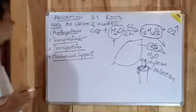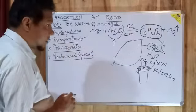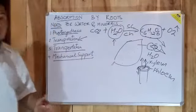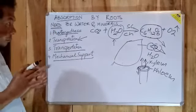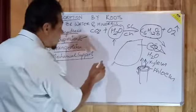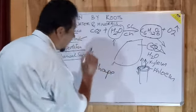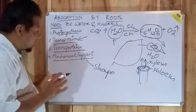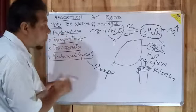Then the last one obviously is mechanical support. What is mechanical support? Once the plant becomes turgid, that is when it becomes full, then it basically gives a shape to the plant. It gives a shape to the plant, therefore it provides support to the plant so the shape of the plant can be maintained.